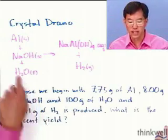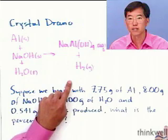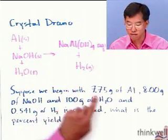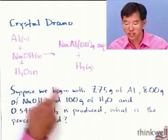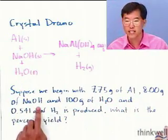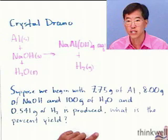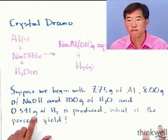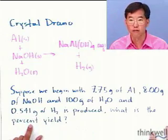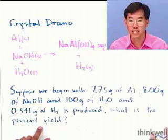And to do this problem, we're going to have to take this reaction, which is unbalanced, first balance it, and then convert these masses into moles, use the balanced reaction and the mass and the moles of each of our reactants in order to determine the limiting reagent. And then from the limiting reagent and the actual quantity of product we obtain, we can get a percent yield.